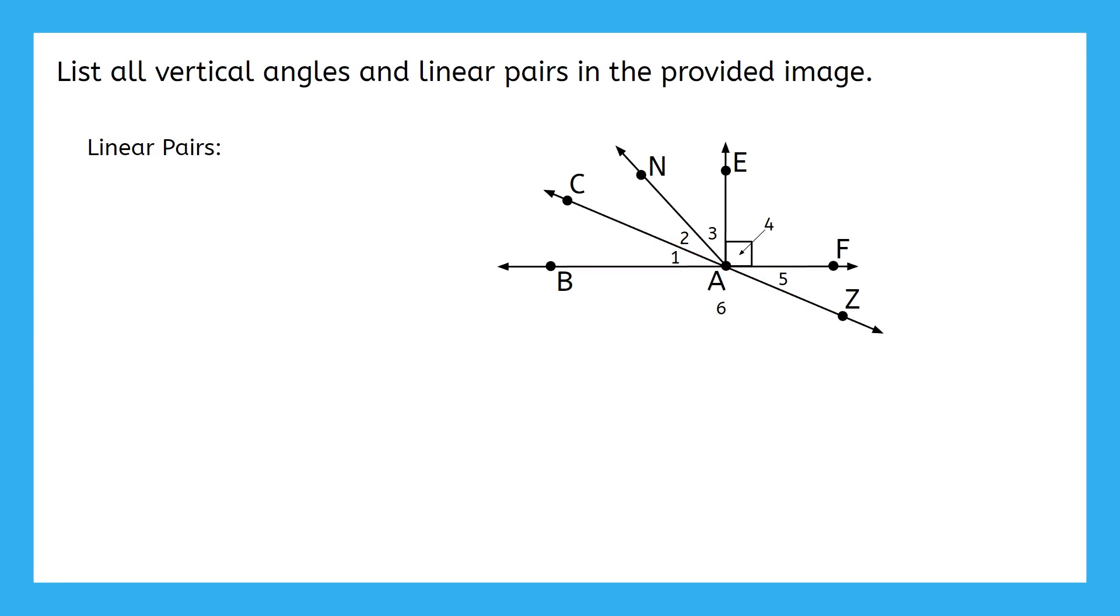We defined linear pairs as supplementary angles that are adjacent to each other. Another way to think of this is angles that form a line, like angle 1 and angle CAF. They form a line, they add up to 180 degrees and are adjacent to each other. There are a lot of linear pairs in this picture, so I'm just going to leave you with the key here. Then you can go at your own pace and compare my answers with yours to see how you did. Pause the video now and take as long as you need.